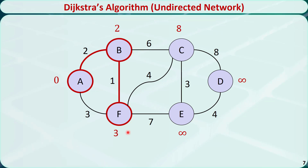Now let's check the neighbors of the visited nodes. Node F has two direct neighbors: node C and node E. The distance to node C is 3 plus 4 equals 7, which is smaller than the previous value of 8, so we replace it with 7. The distance to node E is 3 plus 7 equals 10, which is smaller than positive infinity, so we replace it with 10. Out of all the unvisited nodes, node C has the shortest distance, so we move from F to C.